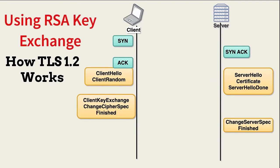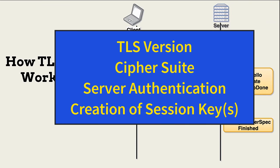This is an example of how TLS versions prior to 1.3 work — it's recommended that all organizations move to version 1.3. The TLS process is a handshake between the client and the server. In general, the handshake determines which version of TLS will be used for the session, which cipher suites will be used, authentication of the server, and creation of session keys. The session keys are used for symmetric encryption of anything exchanged between the two devices after the handshake takes place.